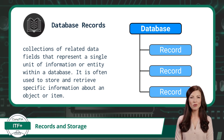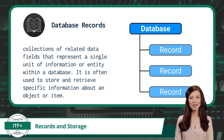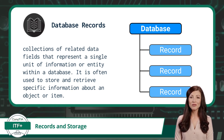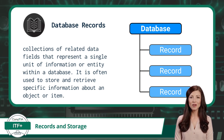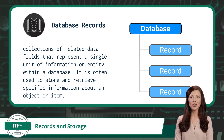To define what a database record is: they are collections of related data fields that represent a single unit of information or entity within a database. They are often used to store and retrieve specific information about an object or item.